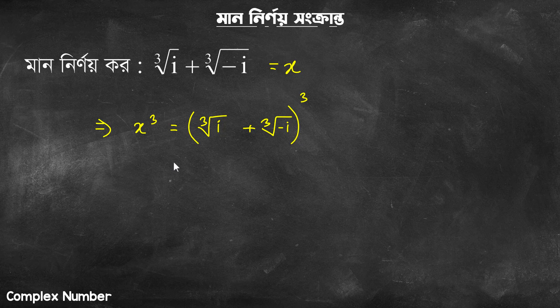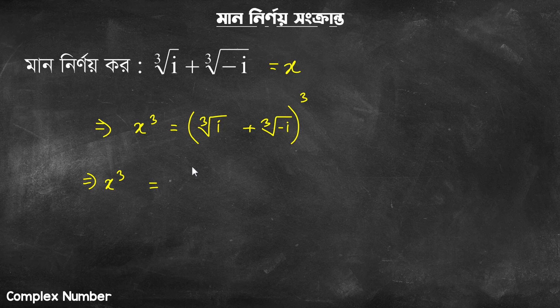Now we have to simplify the right side. Left side is x cube. Right side is a formula — a plus b whole cube. We have the formula: a cube plus b cube plus 3ab into (a plus b).